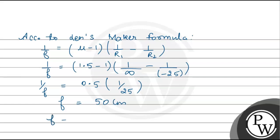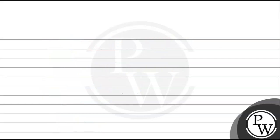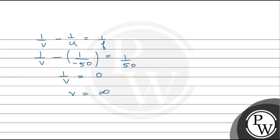Now in the question, the focal length f = 50 cm and u = -50 cm, since the object is placed 50 cm in front. Using the lens formula: 1/v - 1/u = 1/f, we get 1/v - 1/(-50) = 1/50. This gives 1/v = 0, so v equals infinity.